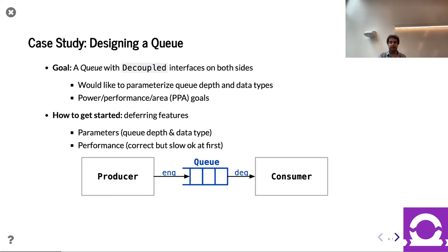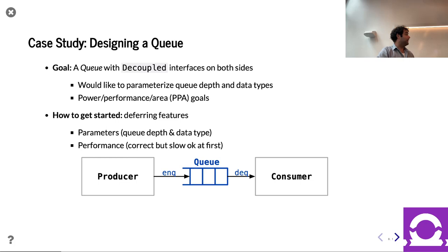So we're going to put this theory into practice today by designing a queue. We're going to try to make this queue very similar to the behavior of the Chisel standard library queue. Normally in this course you should use standard library components when they match your needs, but for the sake of learning, we're going to implement it on our own today.